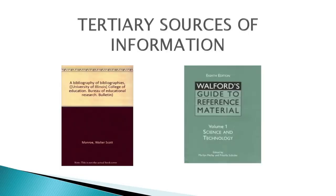Now we come to tertiary sources of information. Tertiary sources are based on primary and secondary sources and serve as a key to those sources. These are usually compilations from primary or secondary sources. These publications do not carry subject information themselves but guide the user to the source where information on a subject is available. Under tertiary sources come publications like guides to literature, guides to reference sources, and bibliographies of bibliographies. Examples include Bibliographic Index, Cumulative Bibliography of Bibliographies, and Walford's Guide to Reference Material.